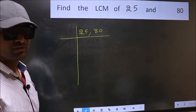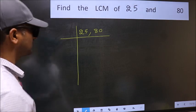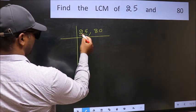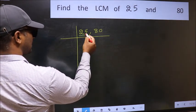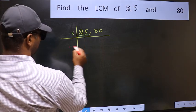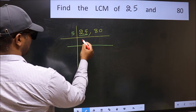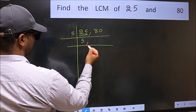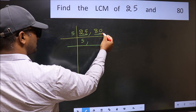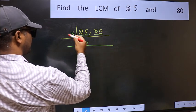Now focus on the first number, which is 25. The last digit is 5, so we take 5 as our divisor. 5 times 5 is 25. The other number is 80 — last digit is 0, so it is also divisible by 5.